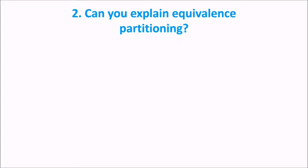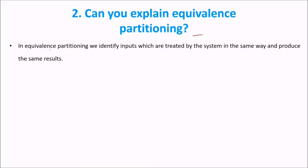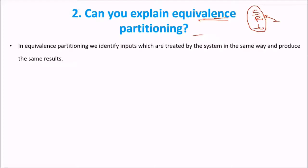The next question is: can you explain equivalence partitioning? In equivalence partitioning, equivalence relation is that relation which follows the symmetric, reflexive, and transitive properties. If certain values follow these properties, we can place them into the equivalence class. Making equivalence classes or partitioning with respect to equivalent values is known as equivalence partitioning.